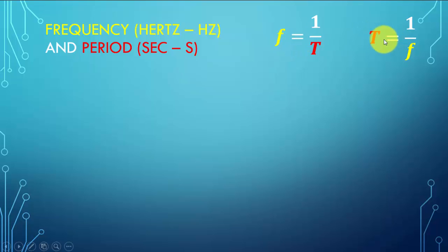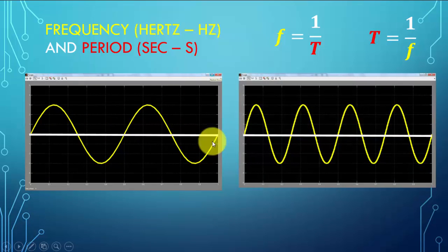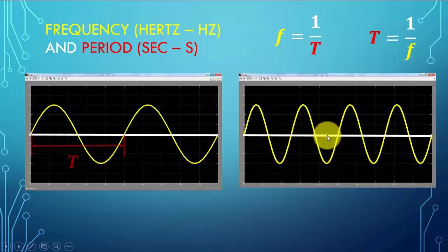Here we have two cycles in one second of time, and here in this chart we have four cycles in one second. We define the period as when it completes one full cycle, so if I start here, it then repeats at this point.